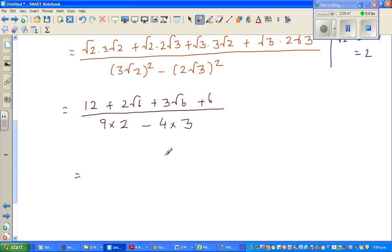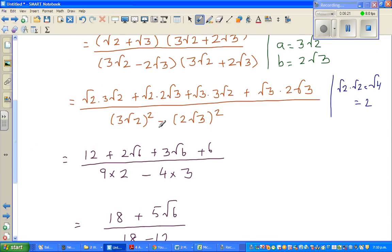So this becomes, so 12 plus 6 is 18. Am I right? 12 plus 6 is 18, plus 2 root 6 plus 3 root 6 is 5 root 6, over this is 9 times 2 is 18 minus 12, which is... 12 plus 6 is 18. Oh, I made a mistake here. Can you see the mistake? This should be 4 times 3 is 12. I don't know why I wrote... 4 times 3 is 12, that's right.